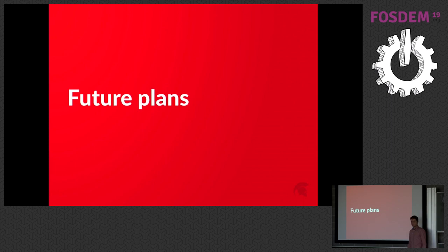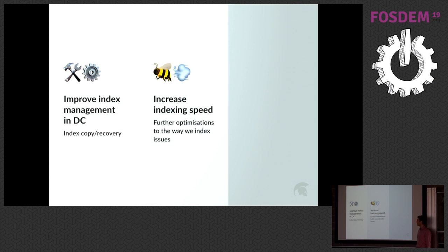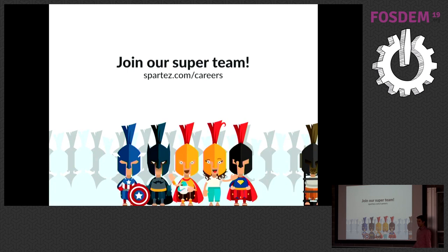JIRA is much better now but it's always constant work to improve it. We want to improve how we manage the index in Data Center — where you have multiple JIRA nodes sharing one database but with their own local indexes — specifically the mechanism to copy the index between nodes on failure. We also want to increase indexing speed by addressing identified inefficiencies. And we need to improve our APIs, because currently a plugin can run a query asking for all one million issues sorted at once, which can bring the instance down — we need to prevent that while not breaking plugin functionality. If any of this interests you, go to spartus.com/careers.